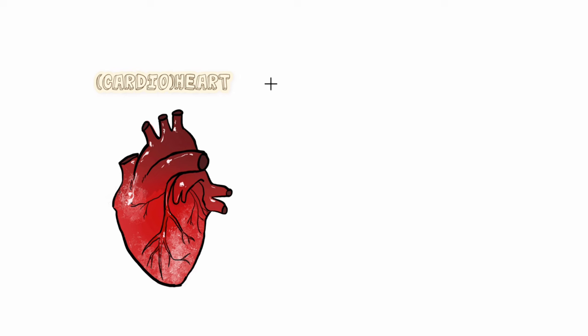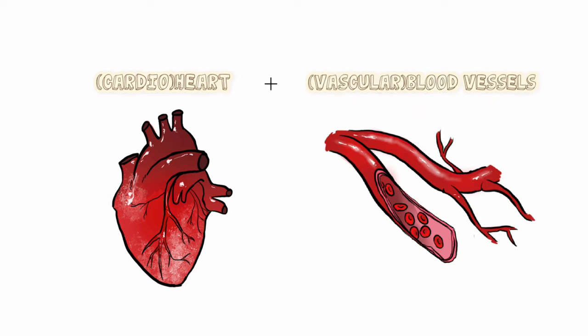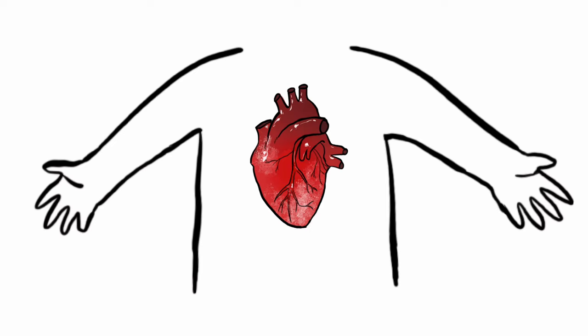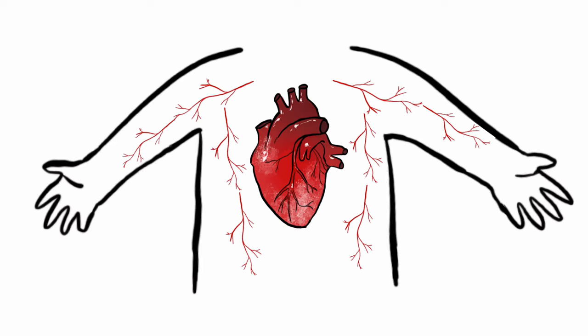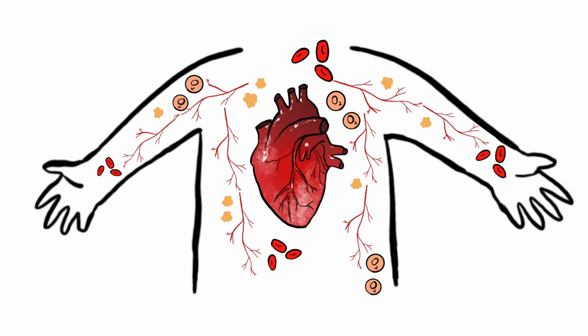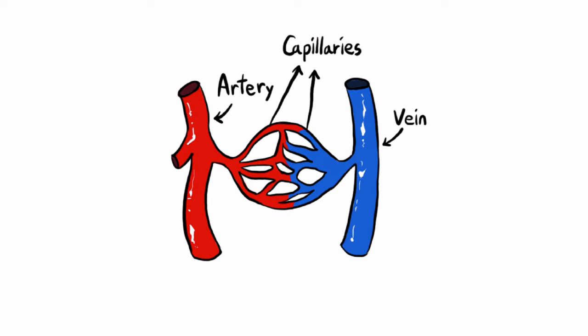The term cardiovascular refers to the heart — cardio — and blood vessel — vascular. Hence, the circulatory system can be defined as the link between the heart and a network of blood vessels that transport and transfuse blood, nutrients, and oxygen throughout the body. The system consists of a muscular and chambered heart, capillaries, arteries, and veins.